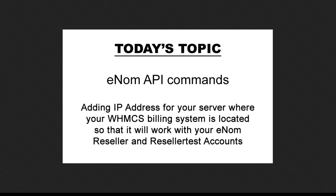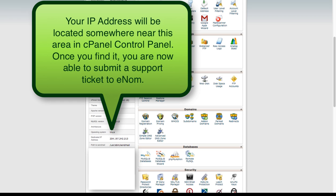Let's look at where you can find your IP address if you have not already done so. In this screen, I have opened up the cPanel control panel. Your IP address can be found in several places. For those of you who do not know where to find the IP address of your server which houses your WHMCS billing system, you can log in to your cPanel control panel and find it located on the left hand side listed under the services provided for your hosting account. In this tutorial, I have found my IP address located right here.